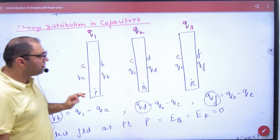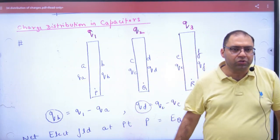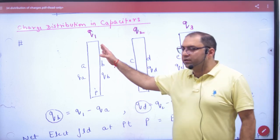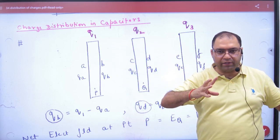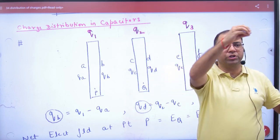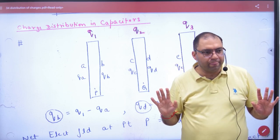The topic is charge distribution in capacitor. In the charge distribution in capacitor there are 3 sheets of metal. I have given Q1, Q2 and Q3 charge. Now what will happen?